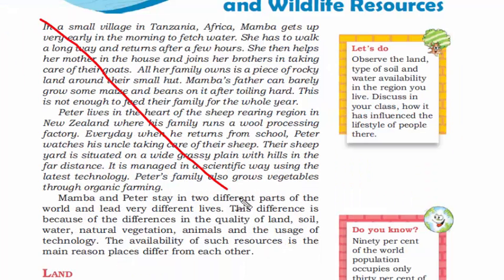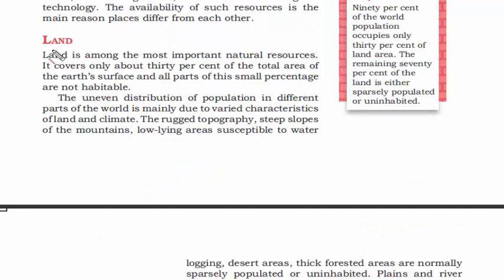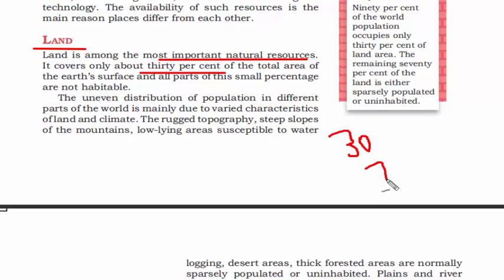It is not important to read the initial long paragraph — it's a small story created to grab your interest in the chapter. So let's go on to the more important aspects. The first thing we'll read about is land. It is the most important natural resource, covering about 30% of the total area of earth's surface. Remember: 30% is land and 70% is water. The land distribution throughout the world is uneven.